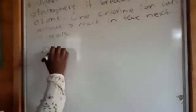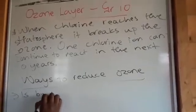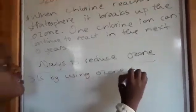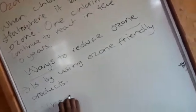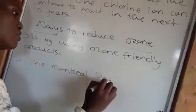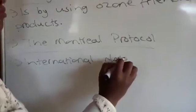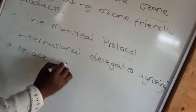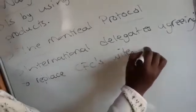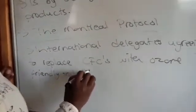So what are the ways to reduce ozone depletion? The ways to reduce it include using ozone-friendly products. We also have the Montreal Protocol, where international delegates agreed to replace CFCs with ozone-friendly products, with targets set by 2010.